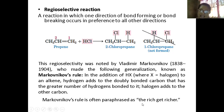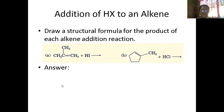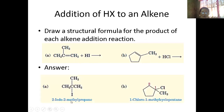Remember Markovnikov's rule: your halogen will go to the carbon with the fewer number of hydrogens; your hydrogen will attach to the carbon with the more number of hydrogens. For example in case A: where is the double bond? Where will hydrogen attach? It attaches to the carbon with more hydrogens. The halogen (iodine) attaches to the other. You will form 2-iodo-2-methylpropane. That is for the addition reaction of an alkene.